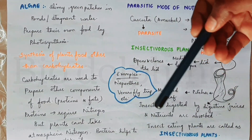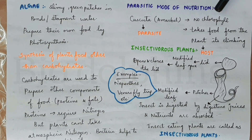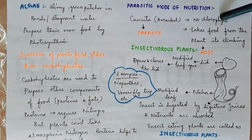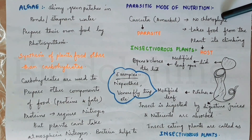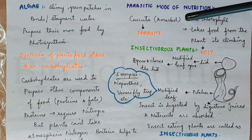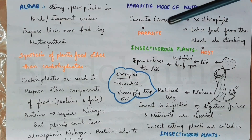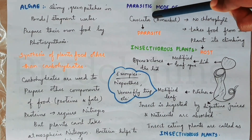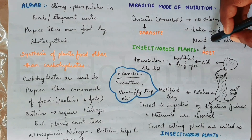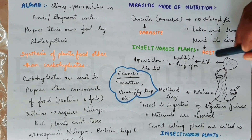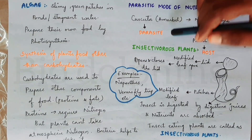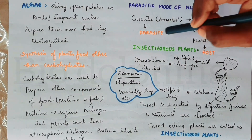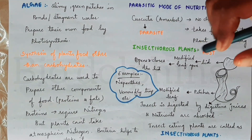Another mode of nutrition is the parasitic mode of nutrition. A parasitic plant, such as a cuscuta plant, lacks chlorophyll and cannot prepare its own food. So it climbs on another plant, called the host, and takes food from it. The parasite depends on the host organism for food.